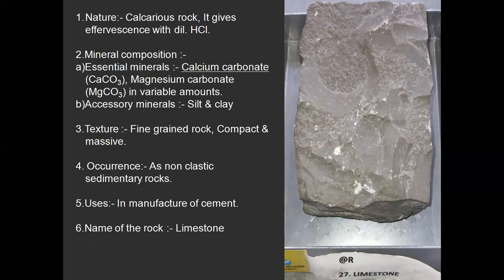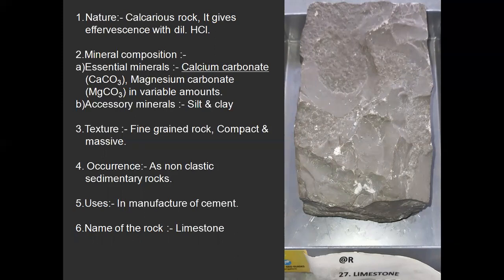Limestone. When you put a few drops of dilute HCl, effervescence — that is, bubbles — comes out from limestone. Essential minerals are calcium carbonate (CaCO3) and magnesium carbonate in variable amounts. Accessory minerals are silt and clay. Texture is very fine grain, compact and massive. It is a non-clastic sedimentary rock. It is used in the manufacture of cement. The important points are: calcareous rock, effervescence with dilute HCl, essential mineral is calcium carbonate, fine grain, compact and massive, non-clastic sedimentary rock, used in manufacture of cement.